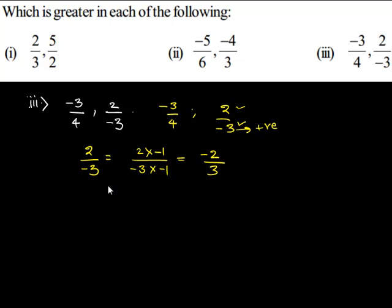Now, we have to compare minus 3 upon 4 and minus 2 upon 3 to find which is a greater rational number.